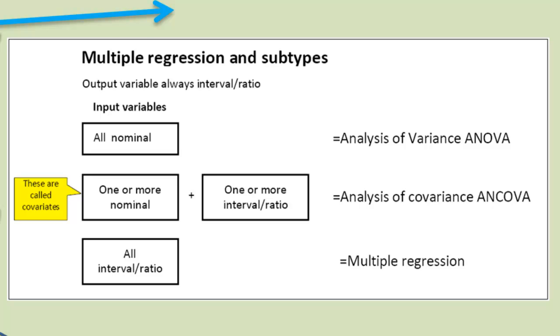Where you have one or more nominal input variables and one or more interval ratio input variables, then it's called an ANCOVA, analysis of covariance. And if they're all interval ratio input variables, then it's just usually called standard multiple regression. Campbell calls all these three types multiple regression, which is fine. I mention these other terms because they're used in older texts.